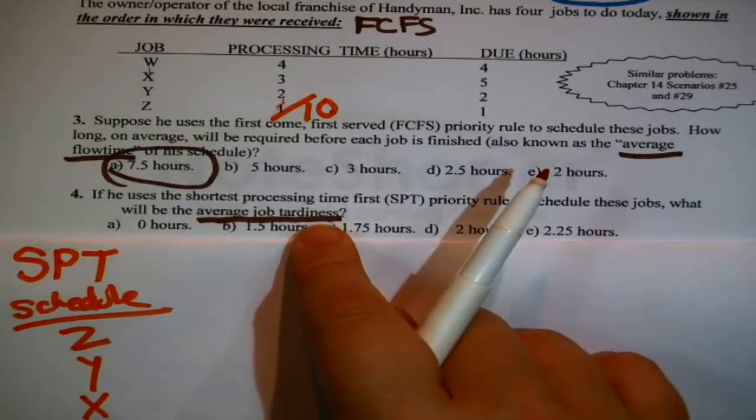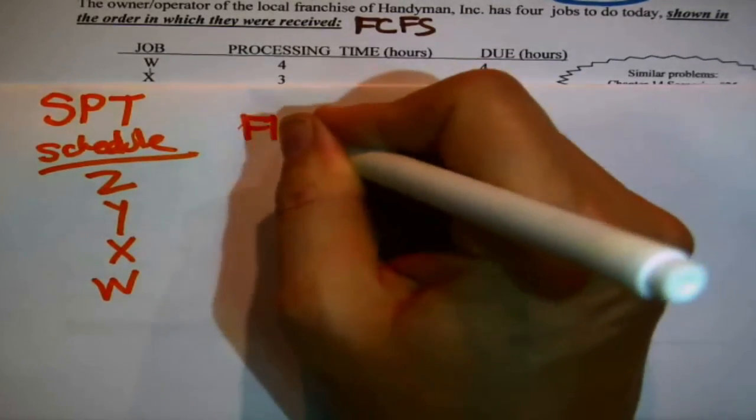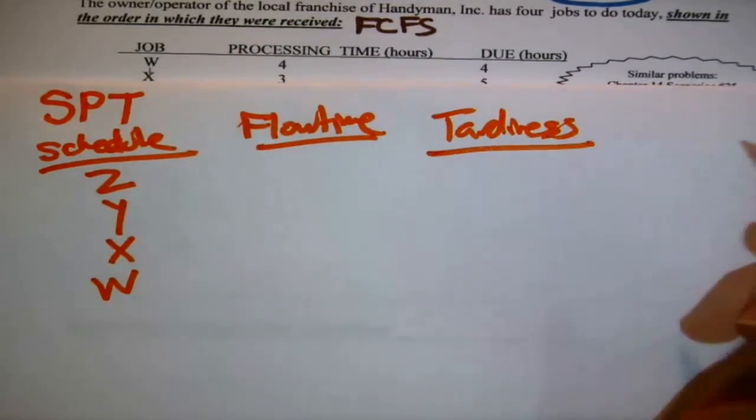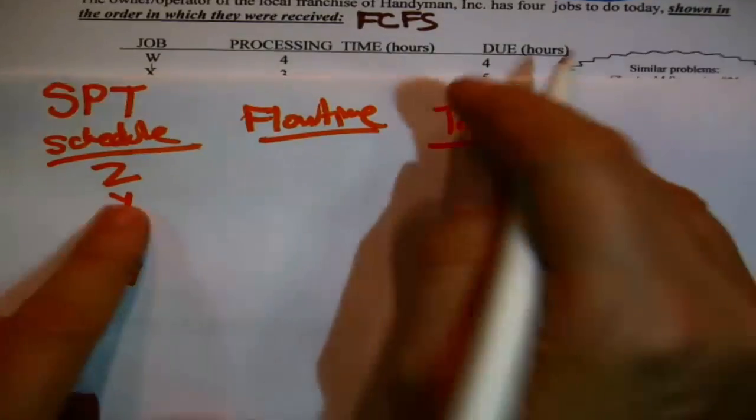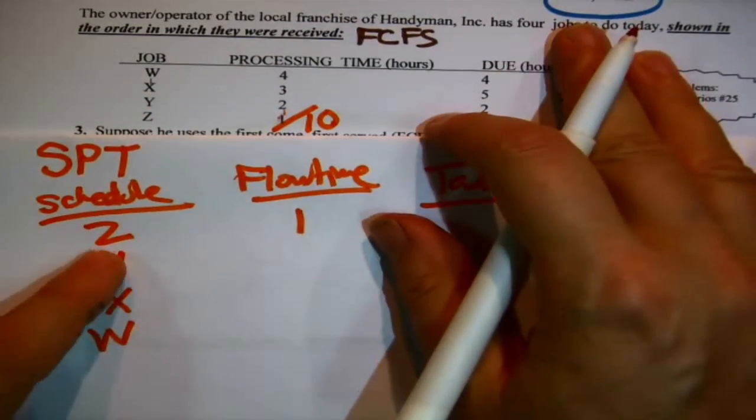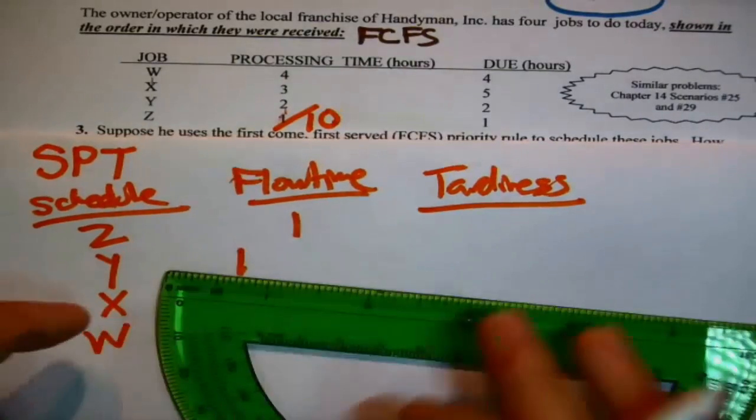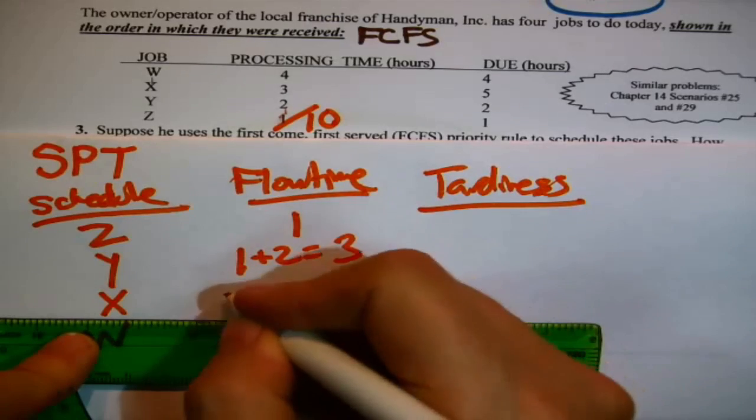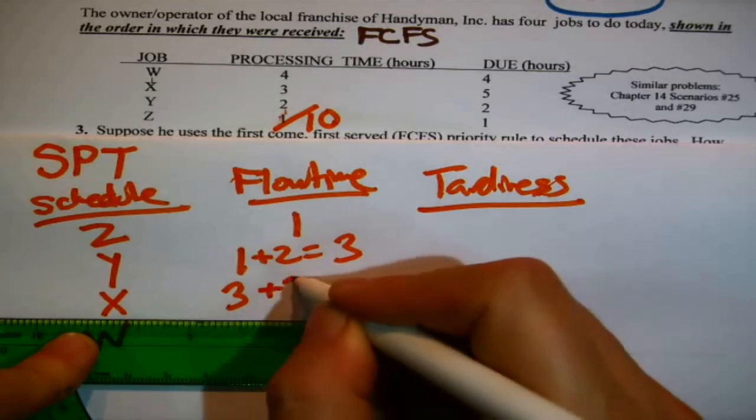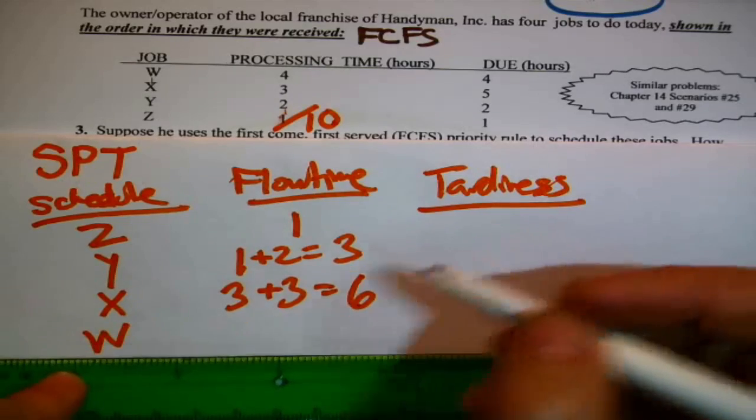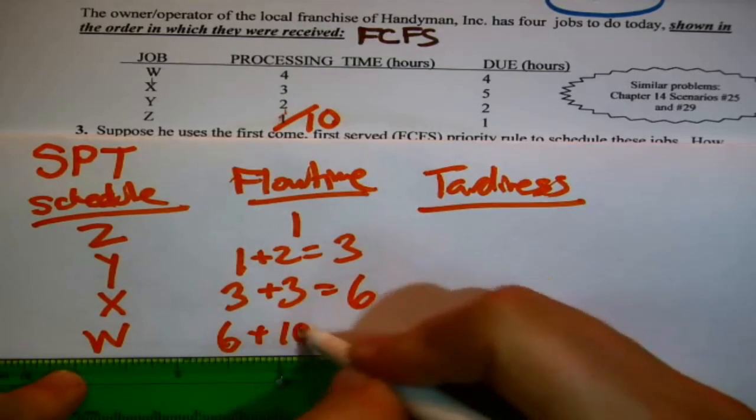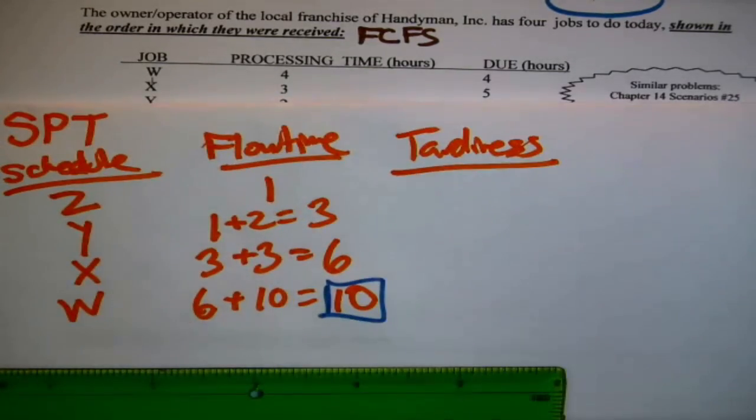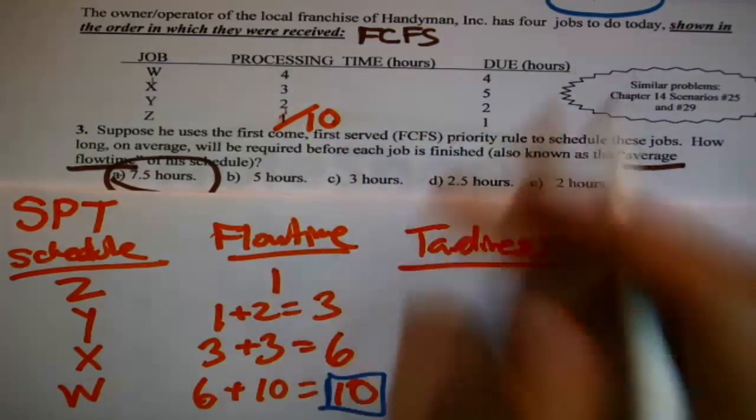What was asked for was average job tardiness. You have to calculate flow time first, because you need that to calculate tardiness. All right, fine, flow time. Job Z is first, it's one hour, that means it'll be done in an hour. Job Y will wait for that one hour. Job Y is two hours worth of work, which means its flow time is three, it'll be done in three hours. X is three hours worth of work. X is waiting another three hours, so it'll be done in six hours. And then W has to wait those six hours, and W is four hours worth of work. And notice it's that same old ten that turns up right here. Good, check on my math.